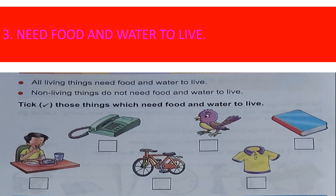Now tick those which need food and water to live. See the pictures on page number 74 and in the slide. You have to identify the living things and put a right tick mark. The boy is eating food — boy is a living thing, so tick yes. Telephone — no. Bicycle — no. Bird — yes, bird is a living thing.